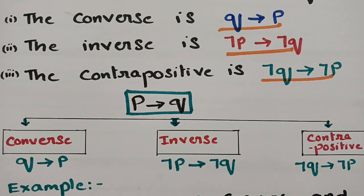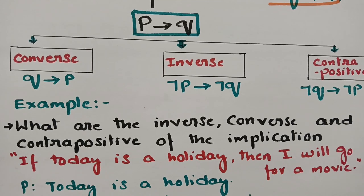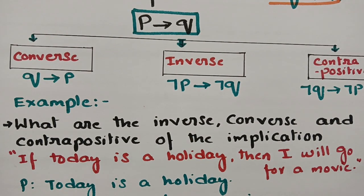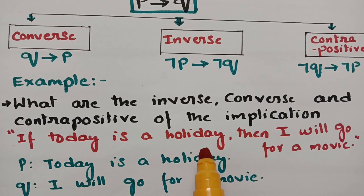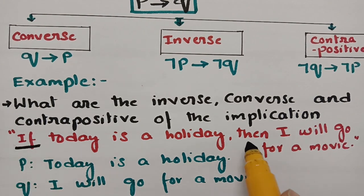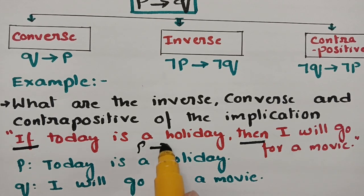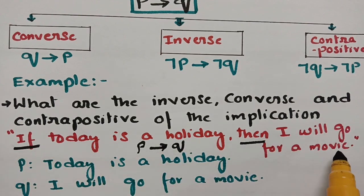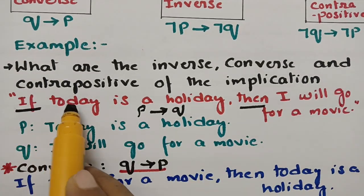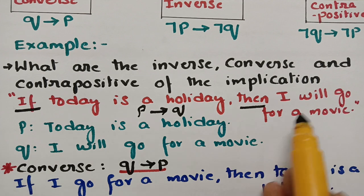Wherever you go, the question will be: write the converse, inverse, and contrapositive for the following statements. If you know the formulae it will be very easy to attempt. The example here is: what are the inverse, converse, and contrapositive of the implication — 'If today is a holiday, then I will go for a movie'? This is a clear if-then statement, so P implies Q, where P is 'today is a holiday' and Q is 'I will go for a movie'.